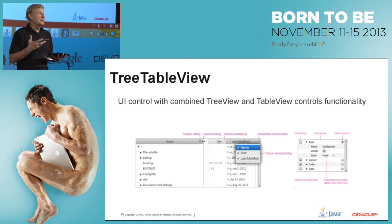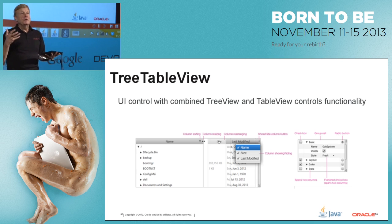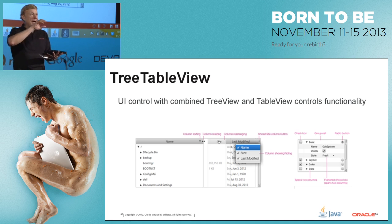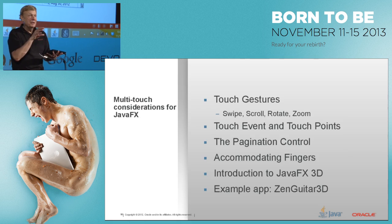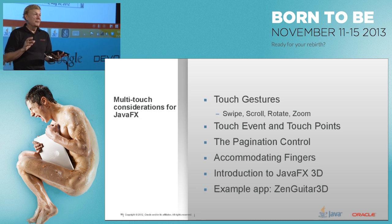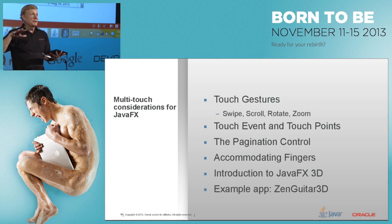There's also a TreeTableView. JavaFX already has a TableView and a TreeView; TreeTableView combines both into one — a hierarchical tree where each node in the tree has multiple columns. Very useful when you want nested data with several columns per item.